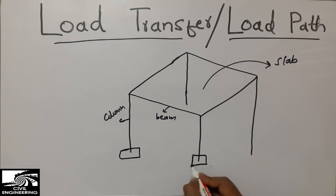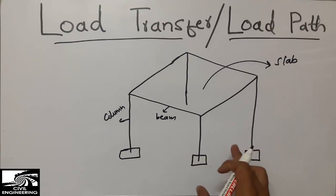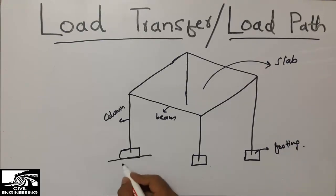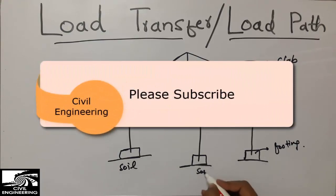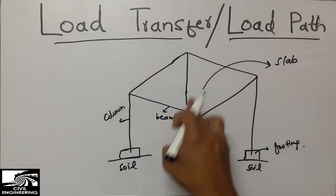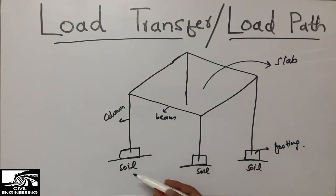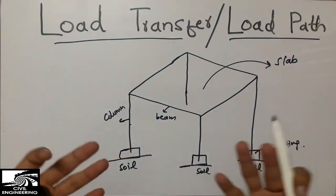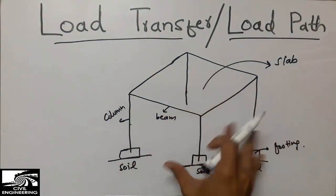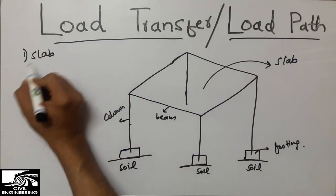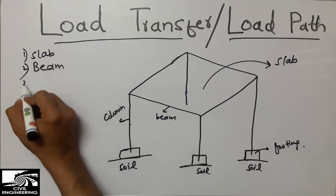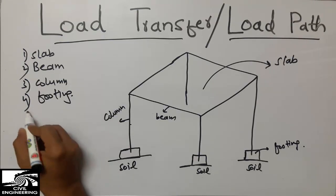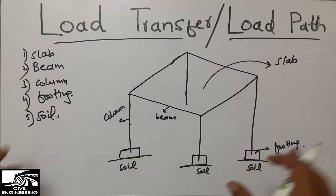The columns are supported by an isolated footing, or any type of footing — you can watch videos about footing in my previous videos on my channel. Below the footing we have soil. Similarly, each column has a footing and below that is the soil. These components — slab, beam, column, footing, and soil — work together and make a structure used for various purposes. These are the most important components in discussing how load transfers from one member to another.